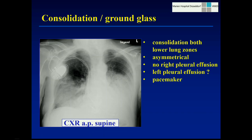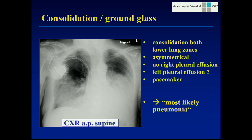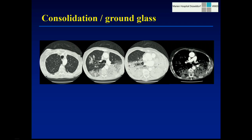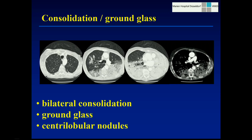Here's a patient in whom it took us quite some time to make the diagnosis. She is a non-smoker, quite old in her 80s, very breathless, and had some mild signs of infection. On the plain film, we reported bilateral consolidation at both lower lung zones, obviously asymmetrical and more pronounced on the left. We did a CT scan, which showed bilateral consolidation, no pleural effusion, some areas of ground glass, air bronchogram, and some small centrilobular nodules distant from the consolidation. We were still thinking of pneumonia.